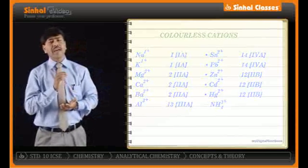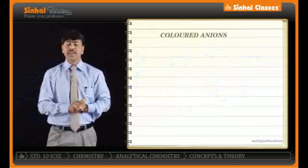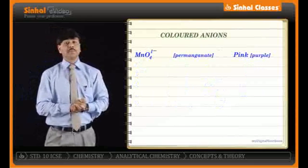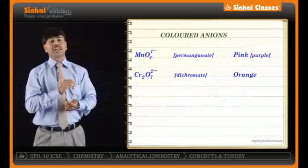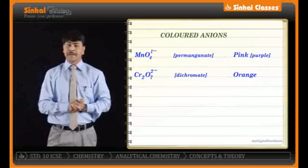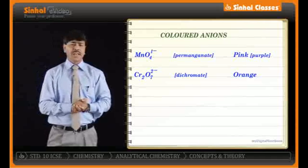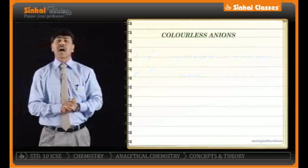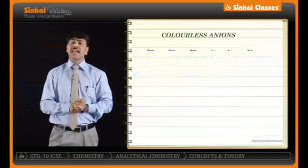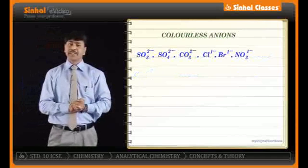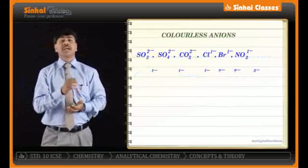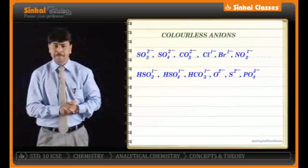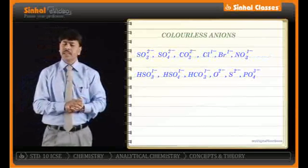In the case of anions, dichromate and permanganate form colored anions. Whereas sulfate, carbonate, and nitrate form colorless anions.